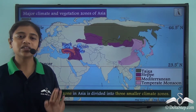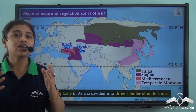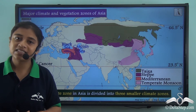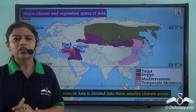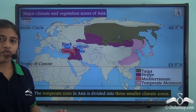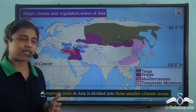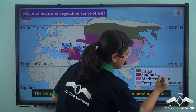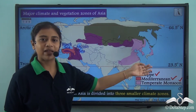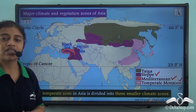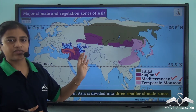That was all about the taiga vegetation and taiga type of climate. Now let us look at another major climate type in the continent of Asia — the temperate type of climate. The temperate zone over Asia has three subtypes: steppy, Mediterranean, and tropical monsoon. We will be looking at each of them one by one.